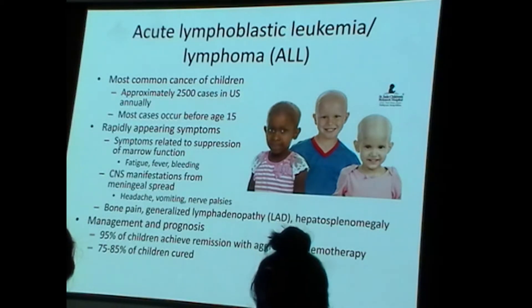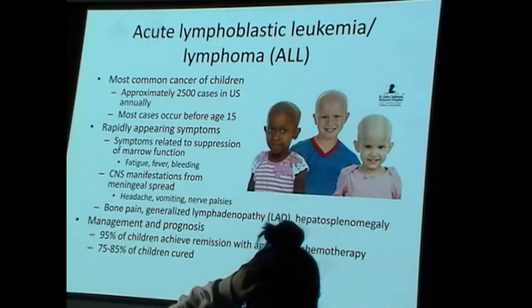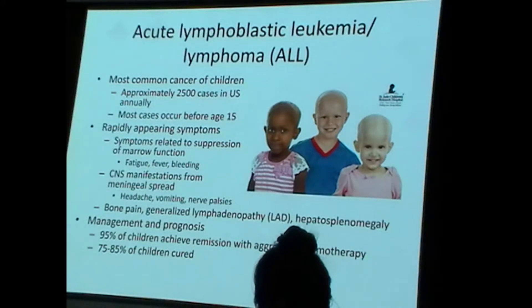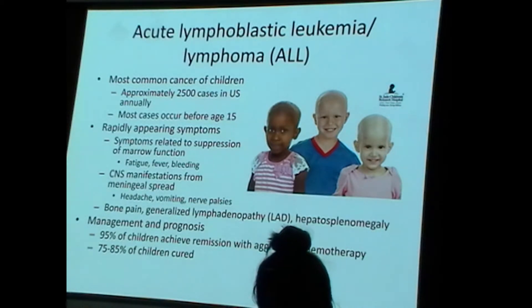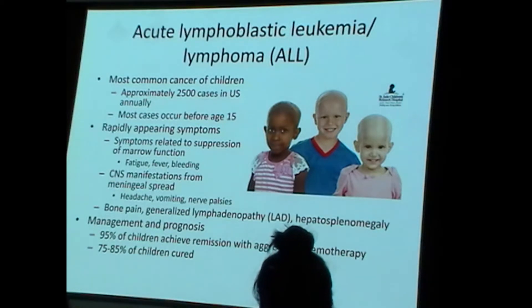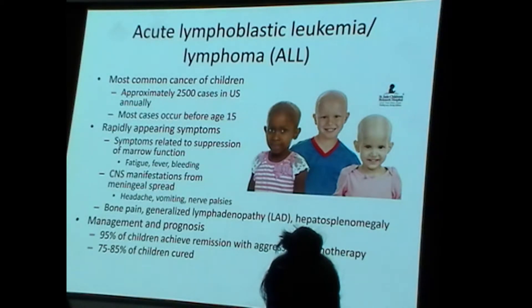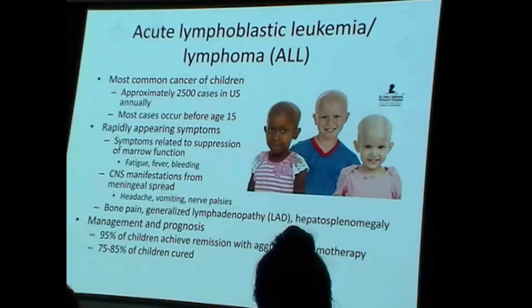ALL is the most common cancer of children, accounting for about a third of childhood cancers. Most cases occur before age 15. Since they're typically rapidly progressive, there is leukemic dissemination of this tumor. Cells in ALL have a predilection for meningeal spread, which can result in headaches, vomiting, and nerve palsies. Fortunately this leukemia is treatable — 95 percent of children achieve remission with aggressive chemotherapy, and 75 to 85 percent are cured.